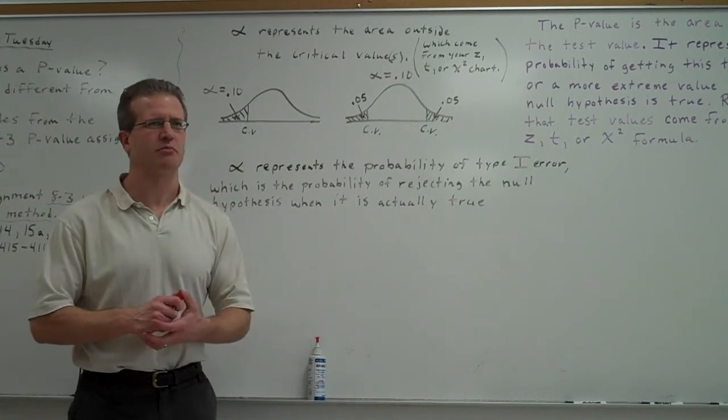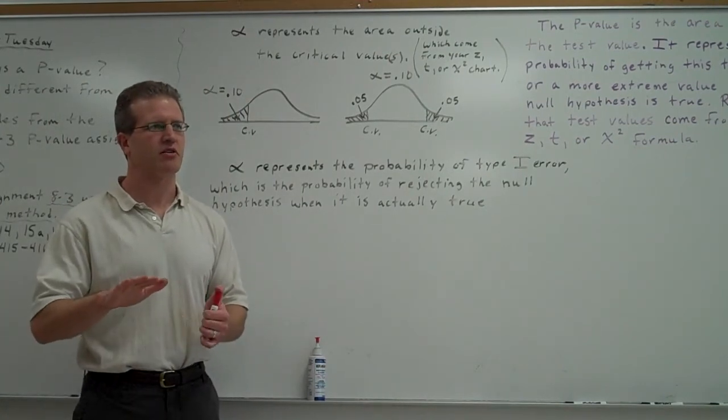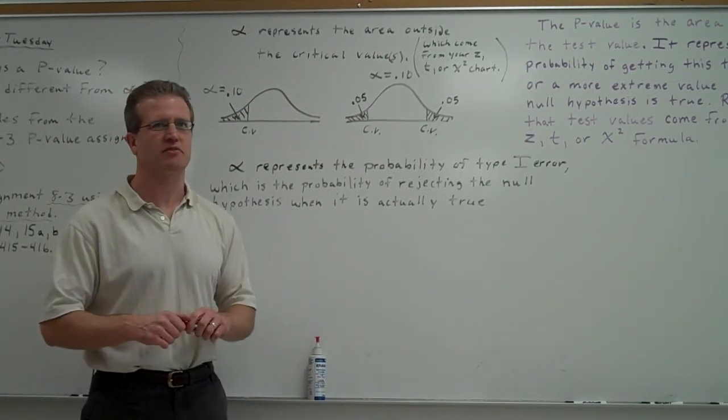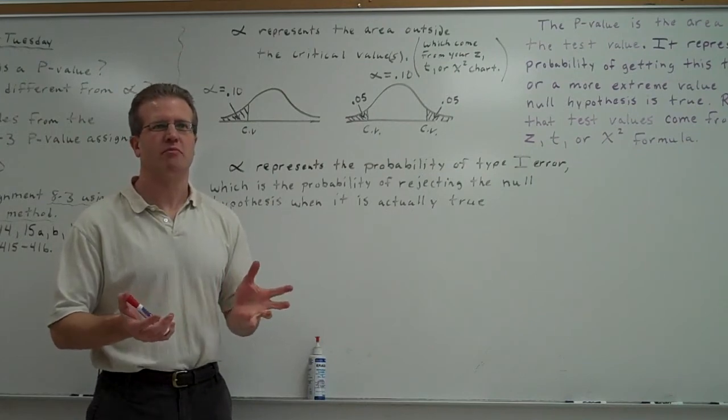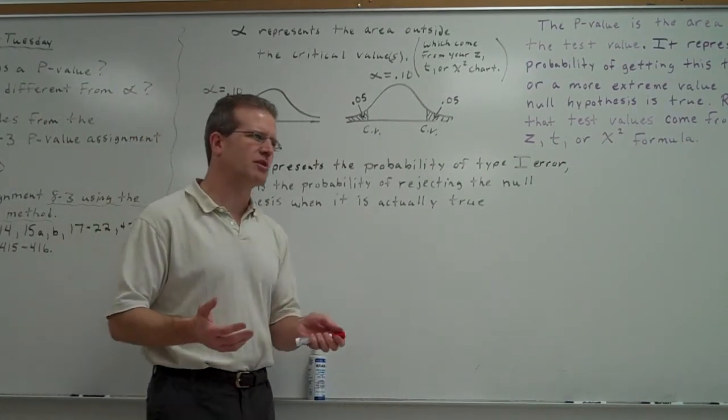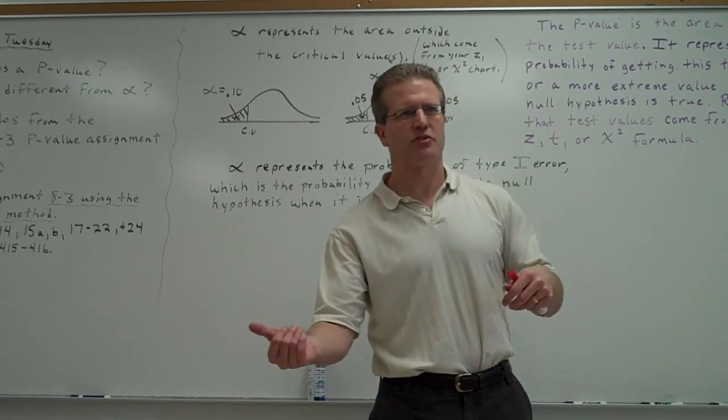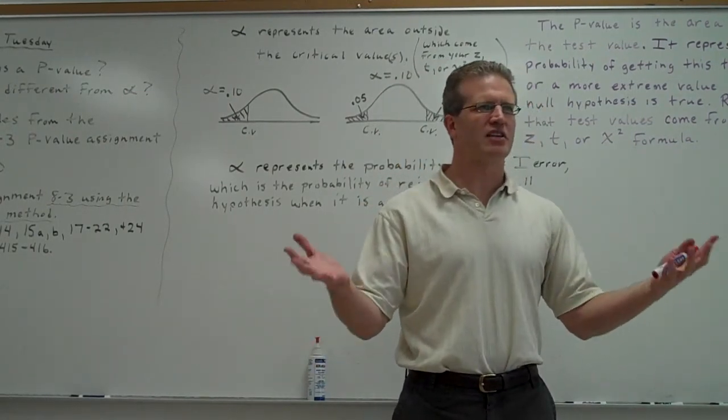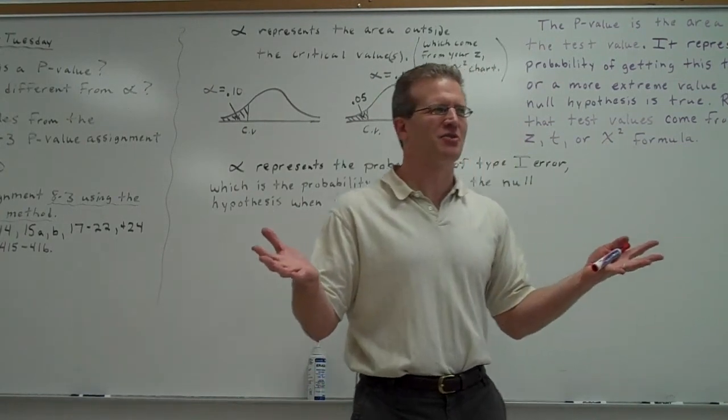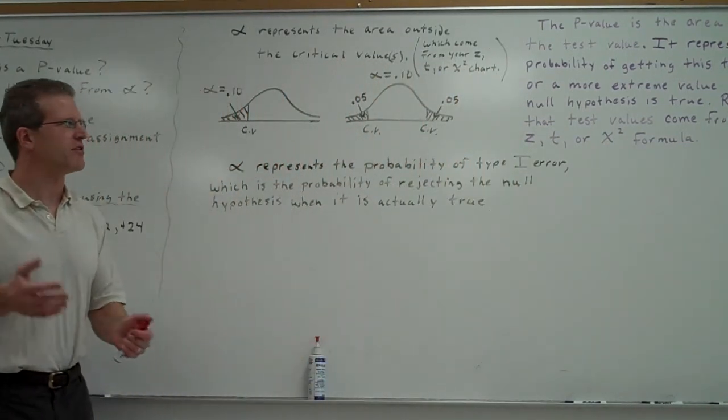So 0.01 might be a good number. But if you're doing something in education where maybe you're just trying to figure out whether this instructional method works better than this instructional method, it's not quite as viable. Nobody's going to die if you're wrong, right? So then you could use a higher alpha value.